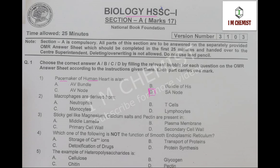The next MCQ is: macrophages are derived from. Macrophages are basically derived from monocytes, so option number C is correct. This MCQ is present on page number 319, and the first MCQ is on page number 294 of your book.